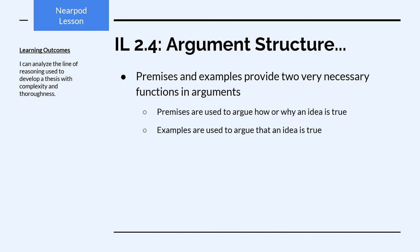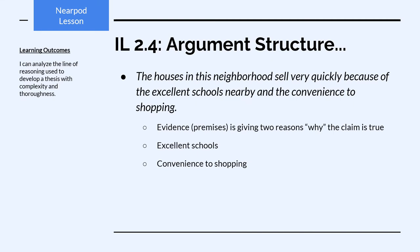Premises and examples provide two very necessary functions in arguments. Premises are used to argue how or why an idea is true, whereas examples are used to argue simply that an idea is true. Looking back at the first sample argument — the houses in this neighborhood sell very quickly because of the excellent schools nearby and the convenience to shopping — the two premises give reasons why the claim is true: because of the excellent schools and because of the convenience to shopping.